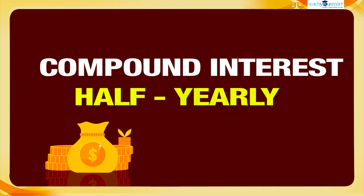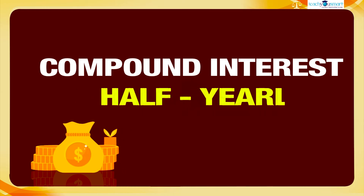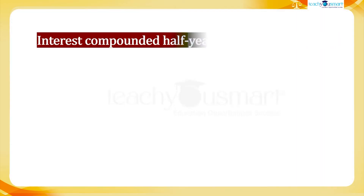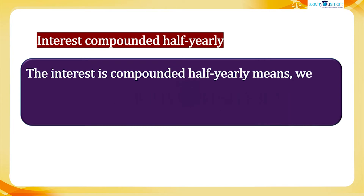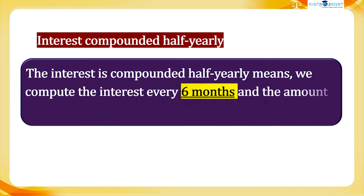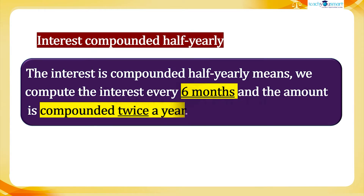What does interest compounded half yearly mean? The interest compounded half yearly means we compute the interest every six months. An amount is compounded twice a year. Let's explain by doing a problem.